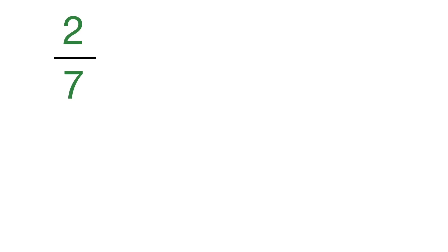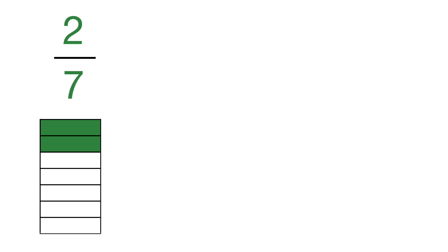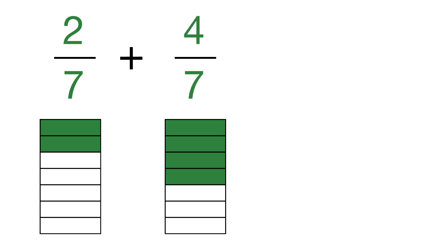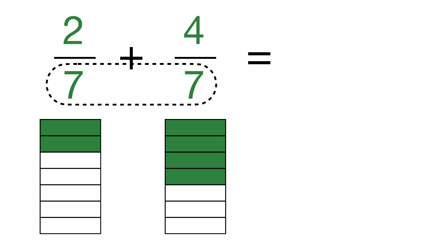Let's start with 2/7 plus 4/7. Here's a visual representation of 2/7 and here's a visual of 4/7. We're going to figure out what this equals using that four-step process. The first thing we do is check that the denominators are actually the same — they are both 7, so we can move on to step 2.